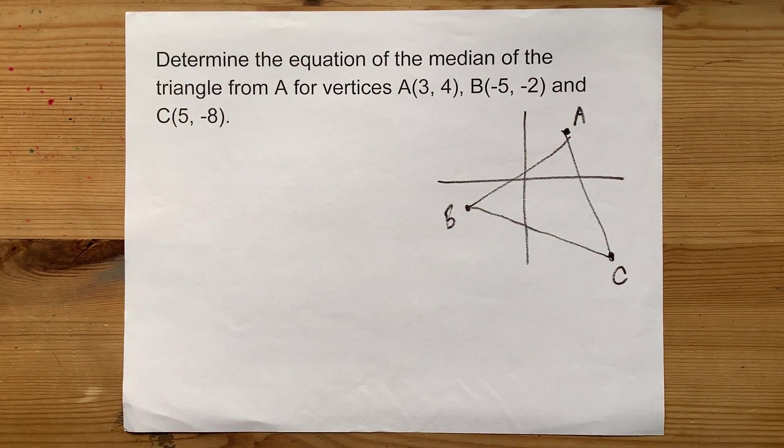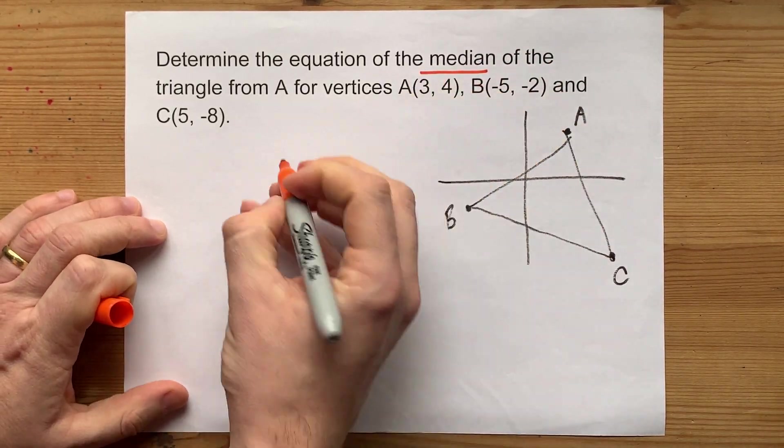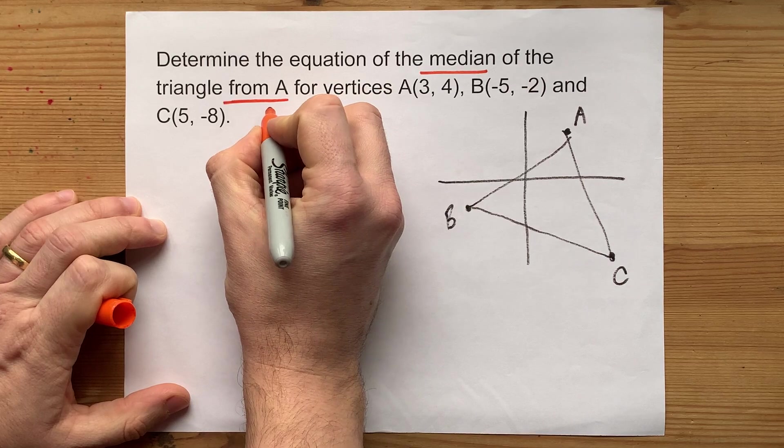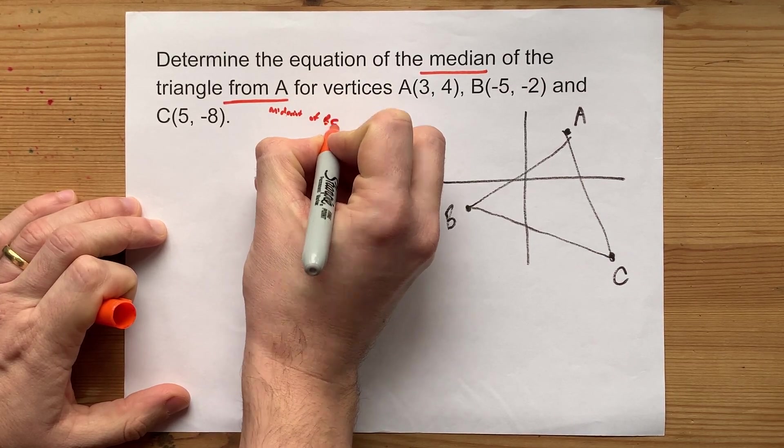The median from A. It's a very specific word. It means it goes from that point to the midpoint of the opposite side. For us, that's BC.